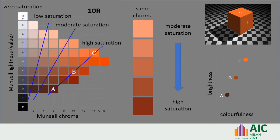Swatches exhibiting constant saturation lie along lines that radiate from near the zero point on the value scale, in contrast to the vertical lines of constant chroma. So swatches A, B and C all exhibit similarly high saturation, but vary considerably in chroma, while swatches in any vertical column exhibit the same chroma, but vary in saturation.